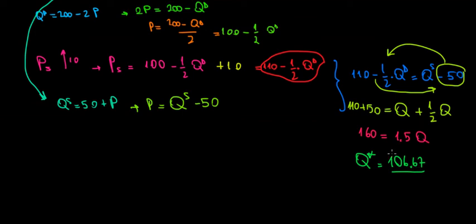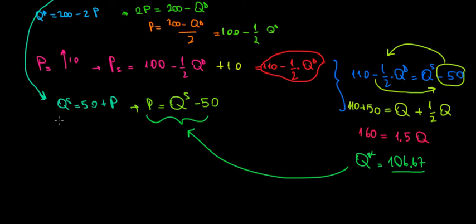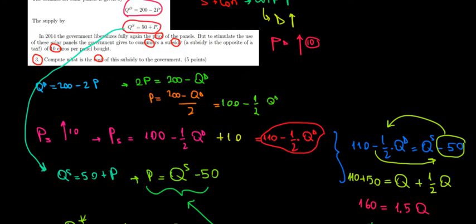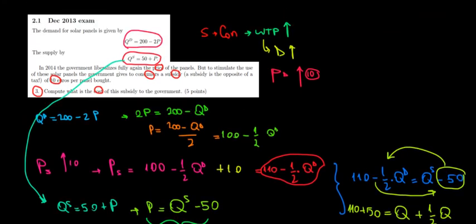At what price? We can substitute the quantity into either price function. Using the supply price function: the equilibrium price with the subsidy equals 106.67 minus 50, which equals 56.67 euros. So the equilibrium price with the subsidy is 56.67 euros and the equilibrium quantity is 106.67 units. That concludes question three.